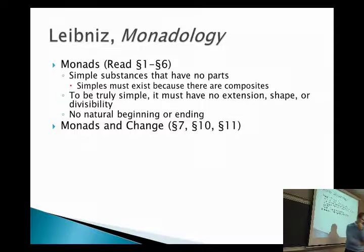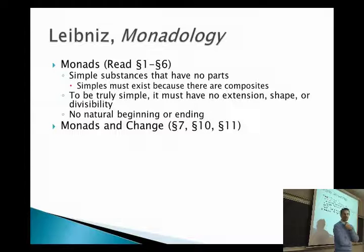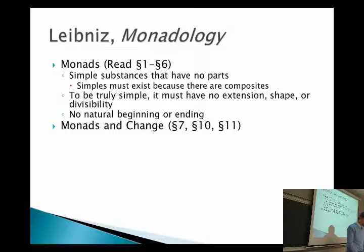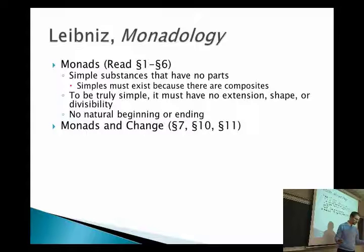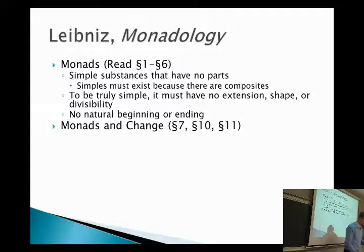What about the nature of change in a monad? How is it that monads are capable of changing? Section 7: 'There is also no way of explaining how a monad can be altered or changed internally by some other creature, since one cannot transpose anything in it, nor can one conceive of any internal motion that can be excited, directed, augmented, or diminished within it, as can be done in composites. The monads have no windows through which something can enter or leave. Neither substance nor accident can enter a monad from without.'